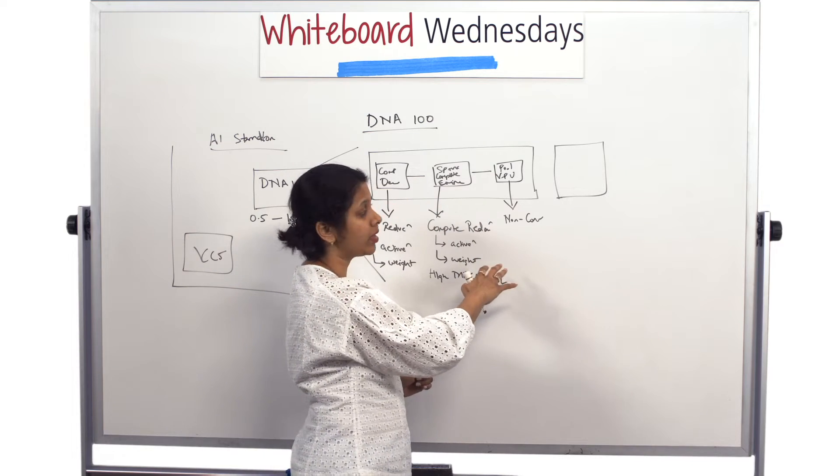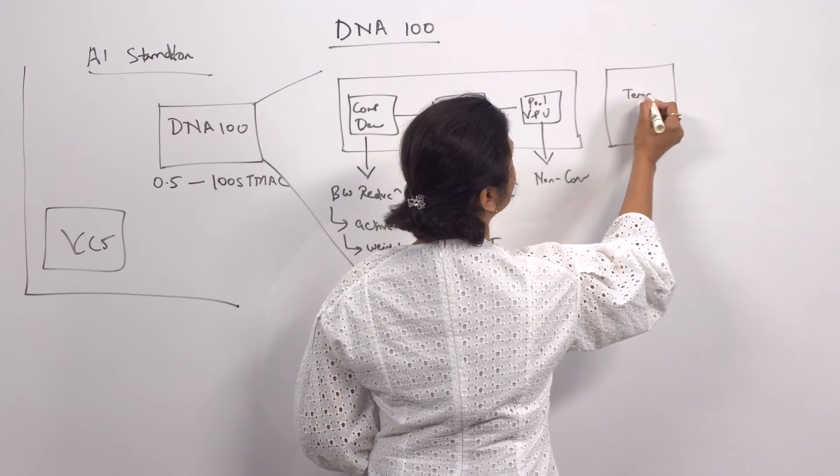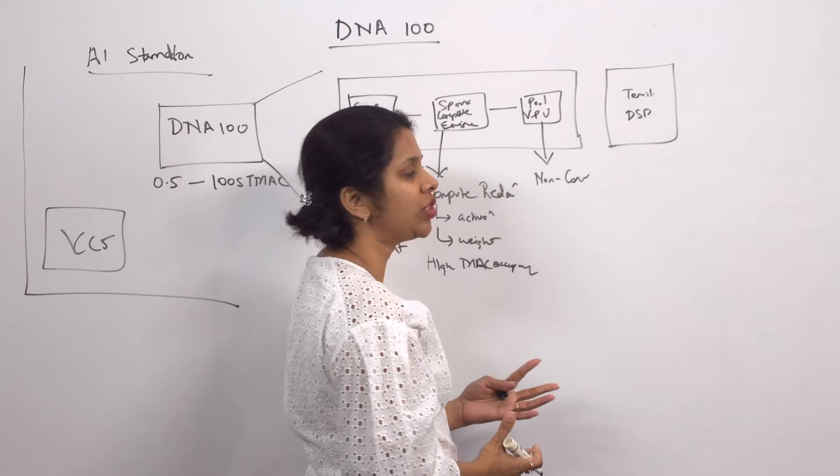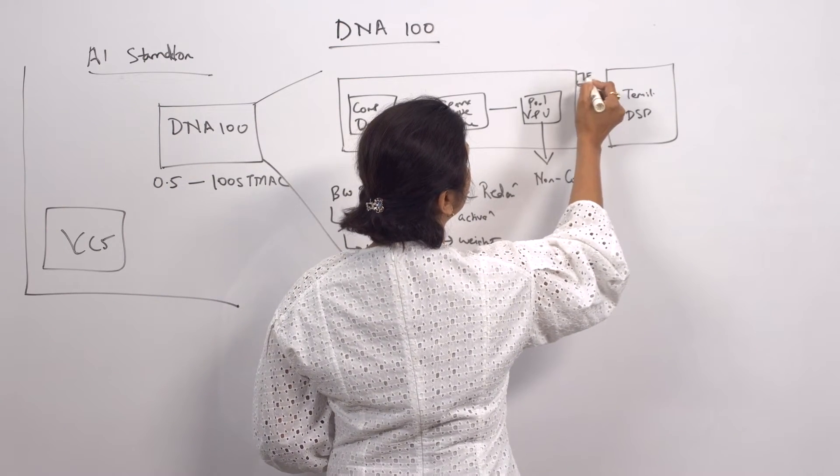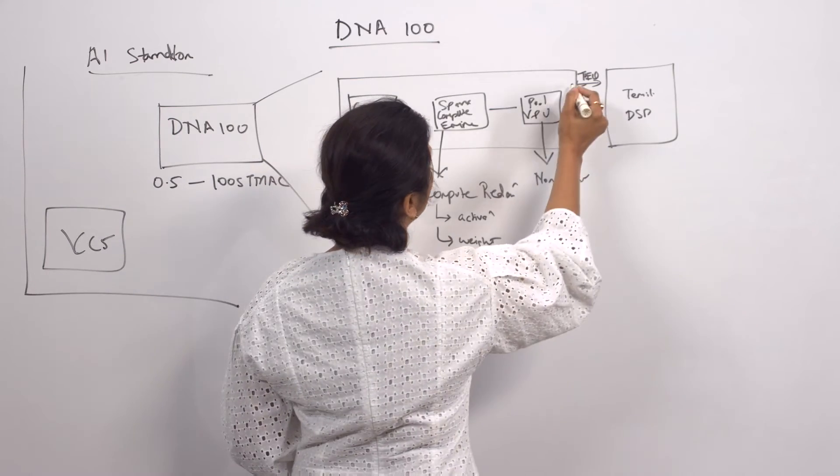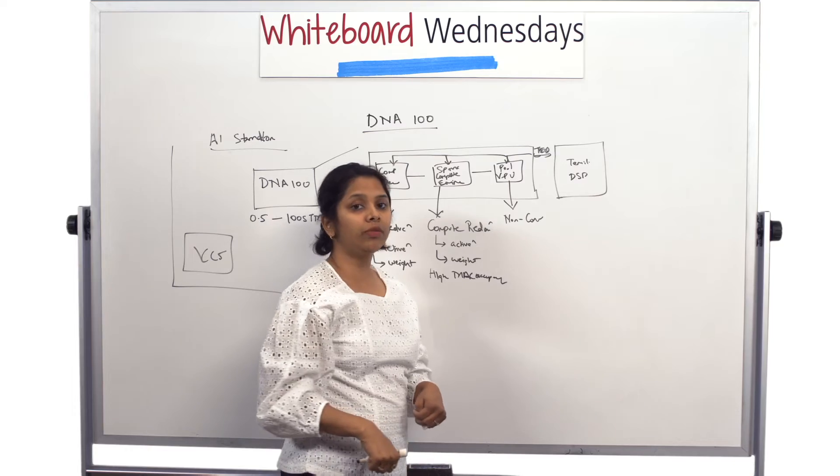With all these hardware components what we have is over here a Tensilica DSP. This Tensilica DSP caters to several things which are needed. First thing, it's connected with TIE-Q interfaces and these TIE-Q interfaces make it tightly coupled with these hardware blocks and it sends these commands, control commands into these hardware blocks as needed.